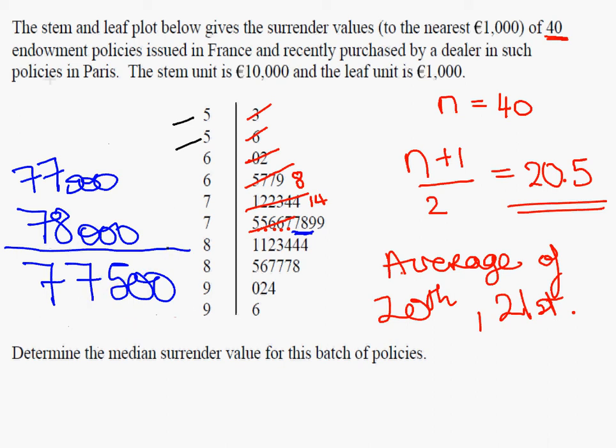So that's the answer we're looking for there. And 77,500, that is the median surrender value for these policies.